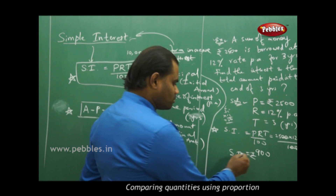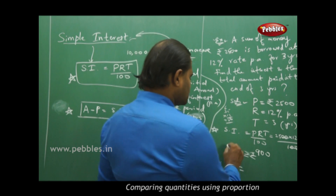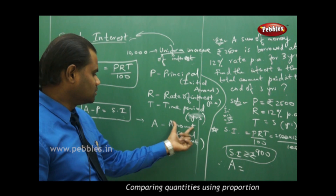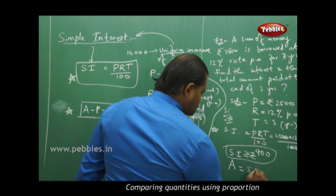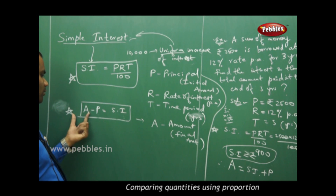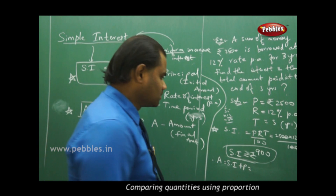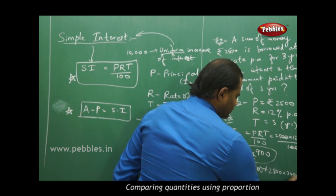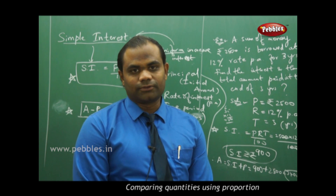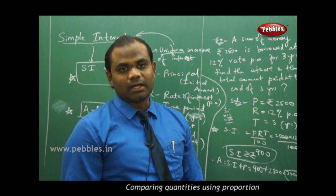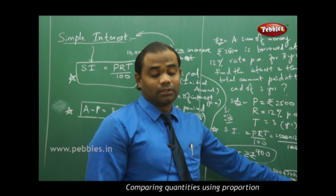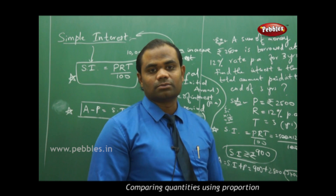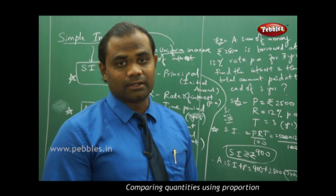The simple interest is 900 rupees, which is the interest paid over three years. The question also asks for the total amount paid at the end of three years. The final amount A = SI + P = 900 + 2500 = 3400 rupees. So the borrowed money is 2500 rupees and the total amount to be paid back after three years is 3400 rupees, with 900 rupees paid as interest.